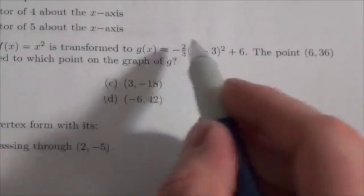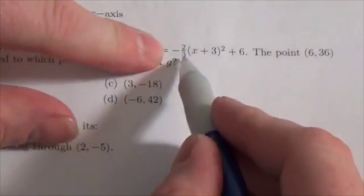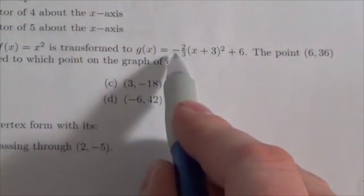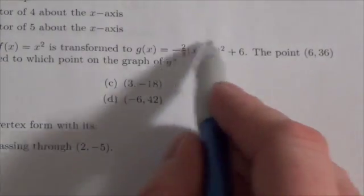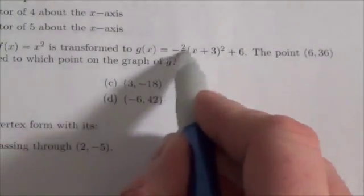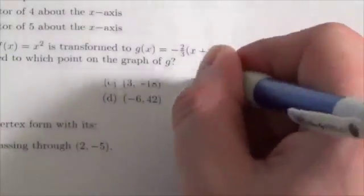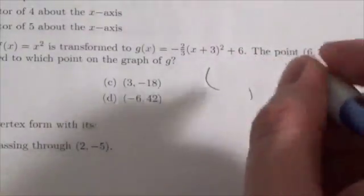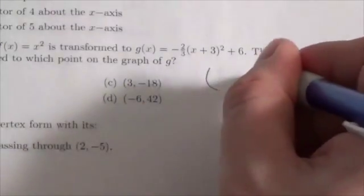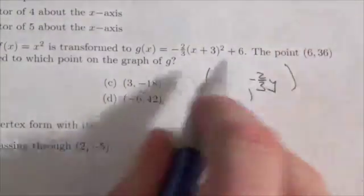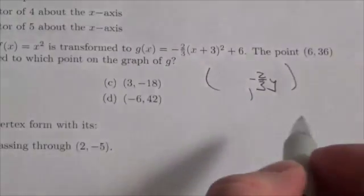This negative and this two-thirds, they are two separate transformations - that is a reflection and this is a stretch. But because they're both outside the squaring, because these happen after the squaring, these are vertical. And so what we're going to see here is on our point, what I'm doing is I am taking and multiplying the y-coordinate by negative two-thirds.